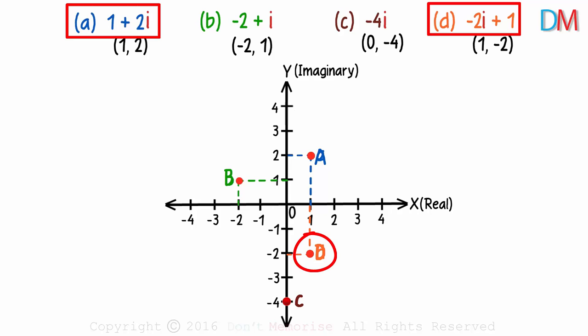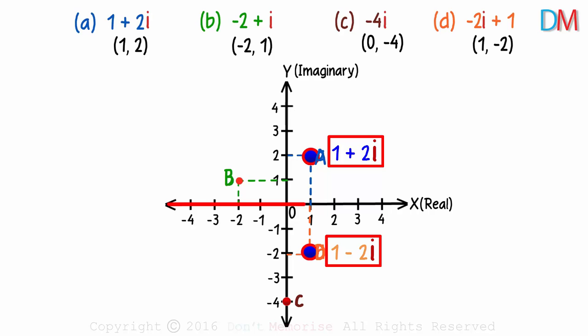And this point on the Argand plane is the mirror image of this one along the real axis. That's an important point. The complex conjugate of a complex number will always be its mirror image across the real axis.